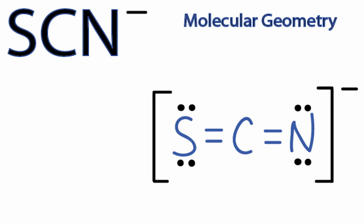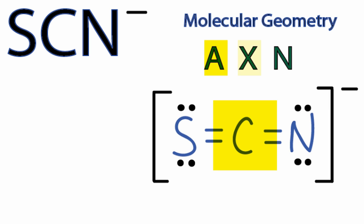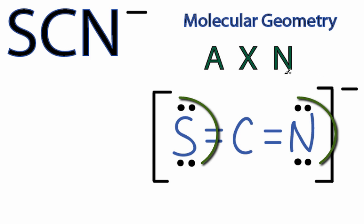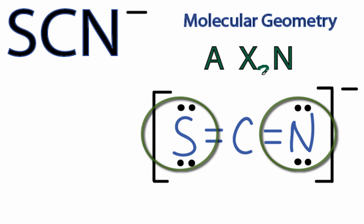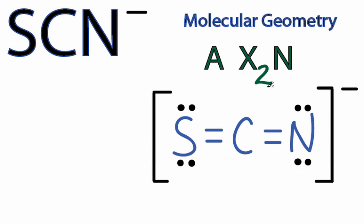We can check that by looking at the AXN notation. A is the central carbon. X is the number of atoms bonded to the carbon — we have sulfur and nitrogen, so X equals 2. N is the number of lone pair electrons on the central atom. All of the electrons are involved in the double bonds on the sulfur and nitrogen, so we can ignore N.